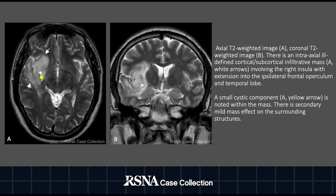An MRI of the brain was performed. This is a T2 sequence in axial plane to your left and coronal plane to your right. There is an intra-axial mass depicted by the arrows on the axial plane involving the right insula, the frontal operculum, and the anterior temporal lobe. The lesion shows ill-defined margins, a small cystic component, and mild mass effect on the surrounding structures, which is better appreciated on the coronal image.